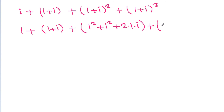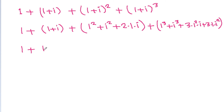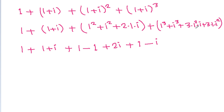Expanding further: iota squared equals minus 1, so (1 plus iota) squared equals 1 minus 1 plus 2*iota. For (1 plus iota) cubed: 1 cubed is 1, iota cubed is minus iota, 3 times 1 squared times iota is 3*iota, and 3 times 1 times iota squared is minus 3.